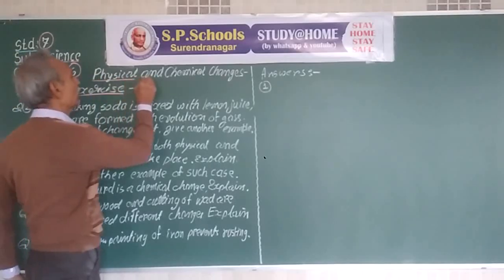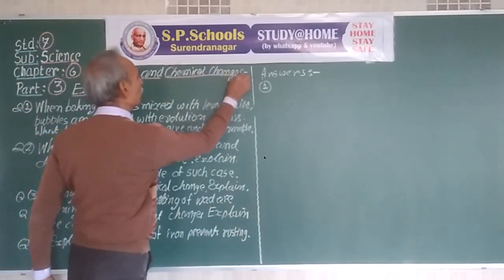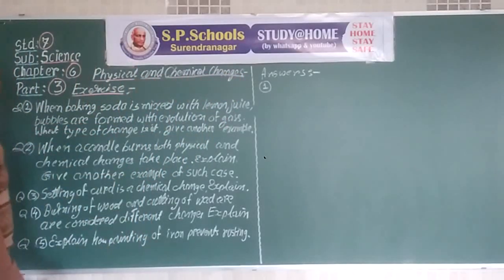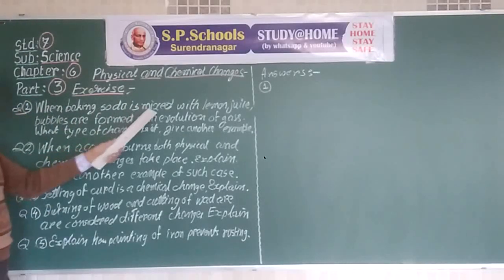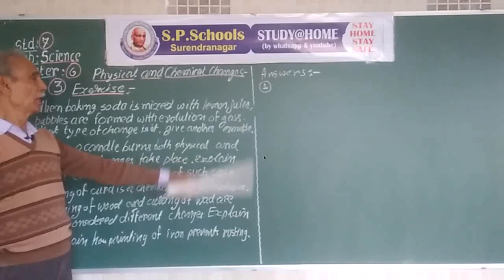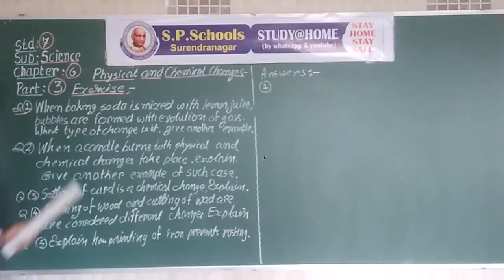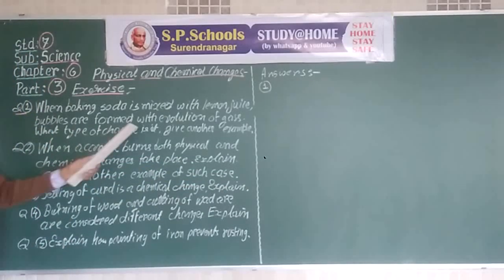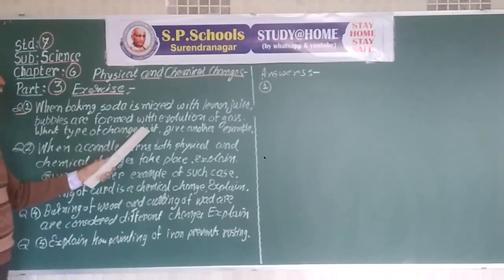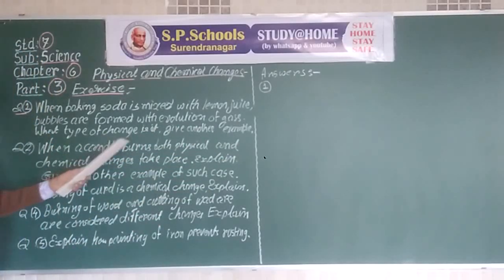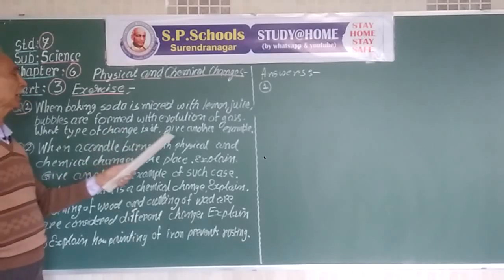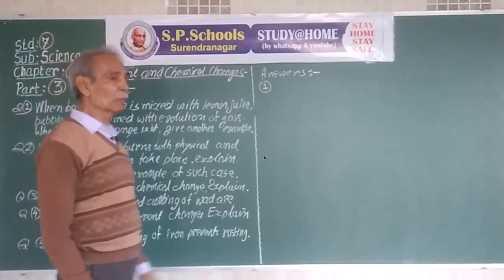When baking soda is mixed with lemon juice, bubbles are formed with evolution of gas. What type of change is it? Give another example.